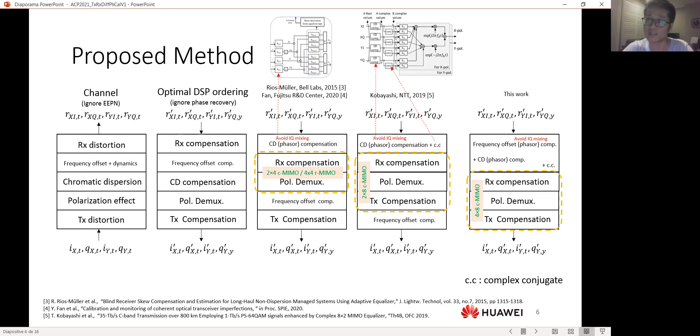In this work, we are going to shift the frequency offset compensation before the CD compensation. This architecture allows us to derive a channel inverse that allows us to extract the transmitter and receiver information. Besides, the ordering of the frequency offset compensation and CD compensation will be respected. For factory calibration, we are going to set CD, chromatic dispersion, to be zero.